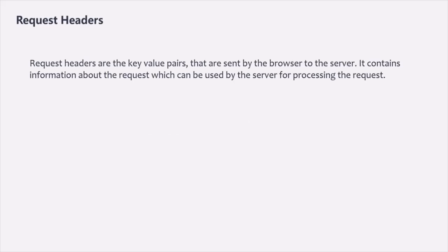HTTP request headers are the key-value pairs that are sent by the client to the server, and they contain information about the request which can be used by the server for processing the request. Keep in mind that the request headers are prepared by the client. In our example, since we are making a request using the browser, the browser is the client and it is the one which will prepare the request headers.